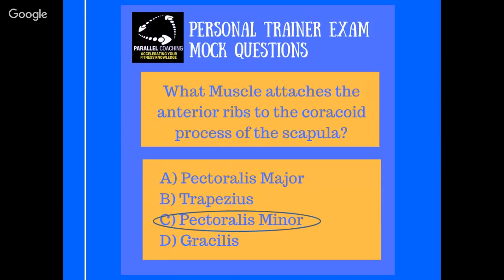The answer is C, pectoralis minor. We know straight away it can't be the trapezius and it can't be the gracilis because they're not in that area. Anterior ribs puts us right up around the chest area — so we know that's our pecs. The trapezius is at the back, and the gracilis is our adductor down on our legs. So it's about breaking down this 50-50 between pec major and pec minor. Pec major is a massive muscle going all across your clavicle and down your sternum, but it goes to your humerus — not to your scapula. Whereas pec minor goes from anterior ribs to the scapula and promotes protraction of the shoulder. Think about where the muscle is and get a clear image of it ingrained in your brain.